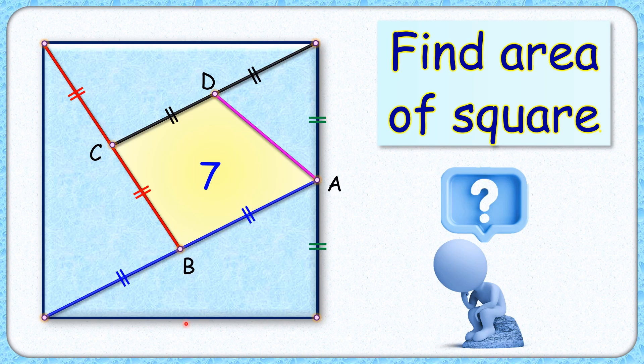Welcome to this interesting question. Given to us is a square with A as midpoint of one of its sides, and B, C, and D are the midpoints of blue, red, and black line segments.